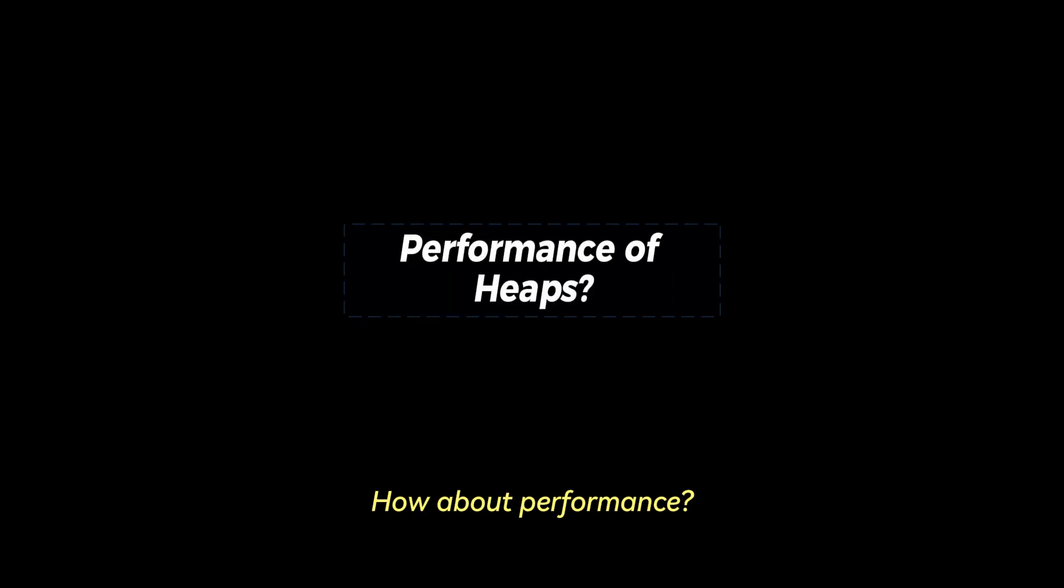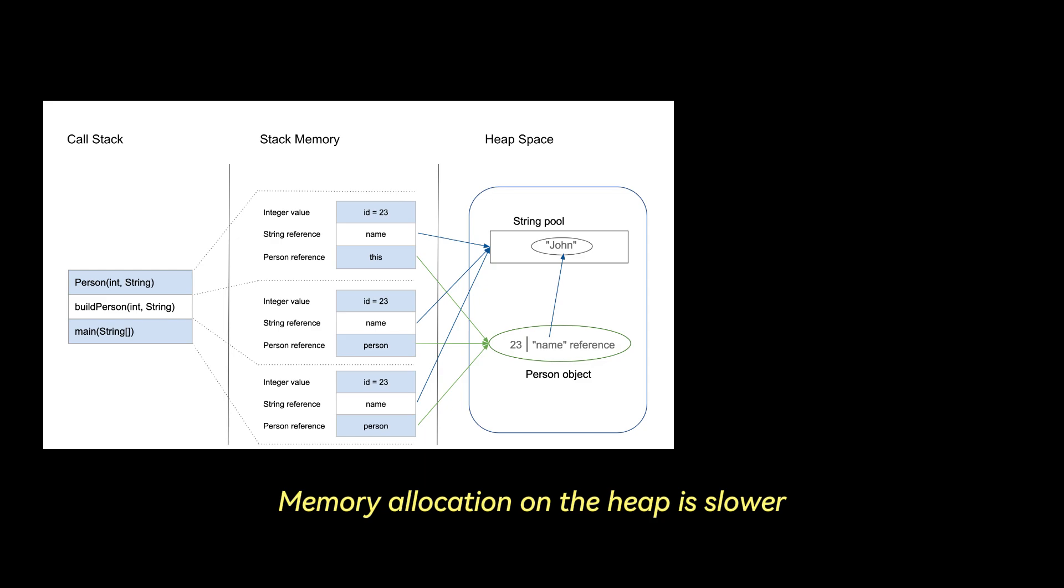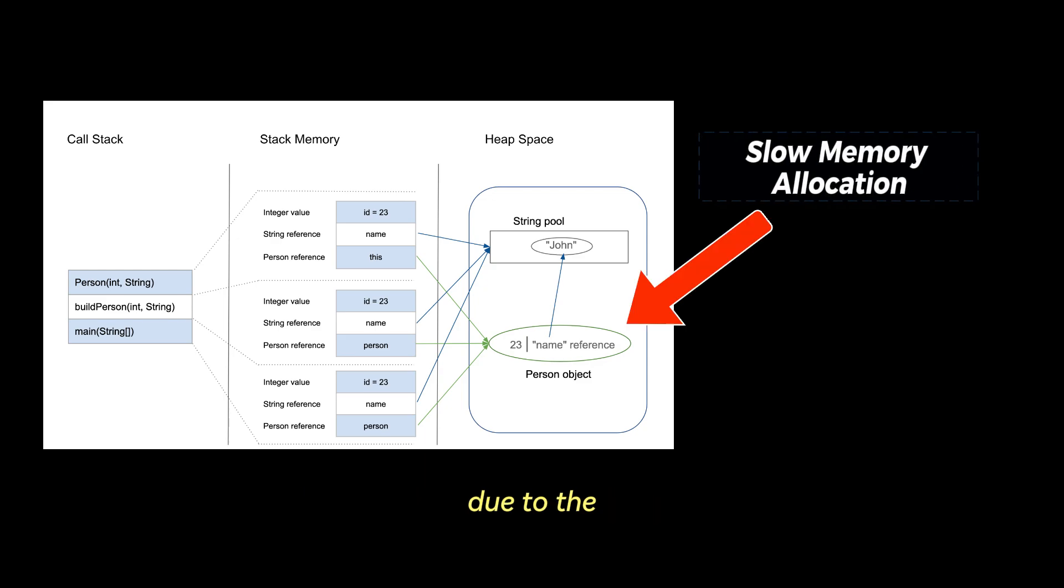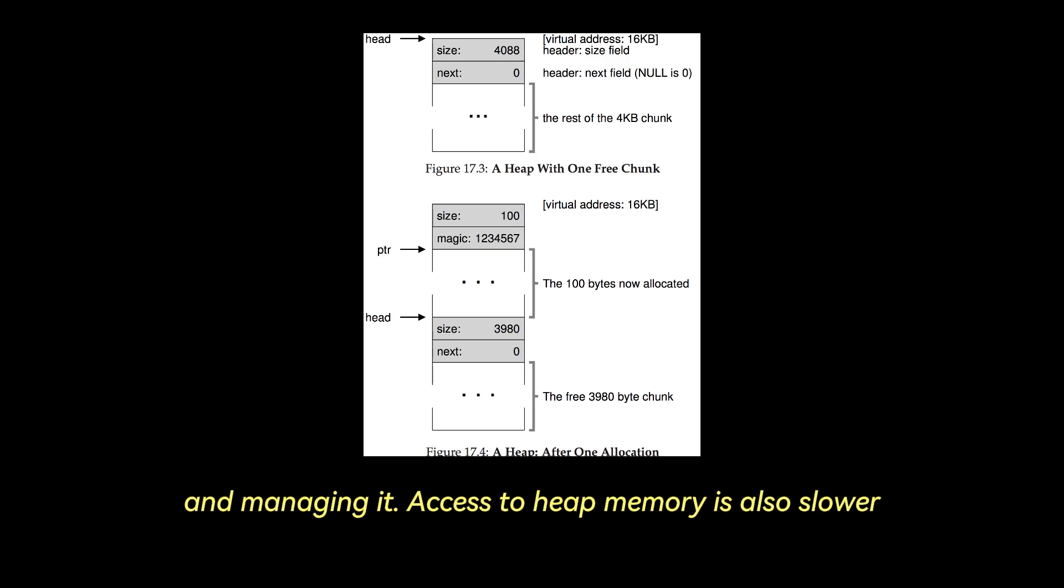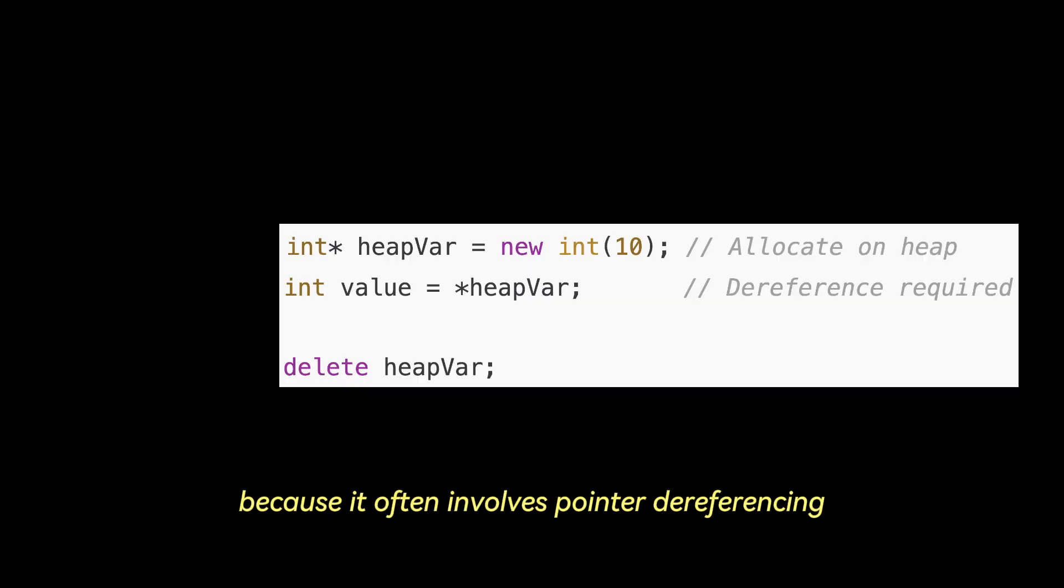How about performance? Memory allocation on the heap is slower due to the additional overhead of locating a free memory block and managing it. Access to heap memory is also slower because it often involves pointer dereferencing.